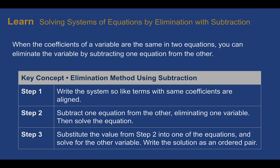Solving systems of equations by elimination with subtraction. Sometimes your coefficients will be opposites — that's when we use addition. When the coefficients are the same, either both positive or both negative, we use subtraction to eliminate one of the variables. The steps are the same as addition, except you line up terms with the same coefficients, then subtract one equation from the other — making sure you subtract everything, not just the first terms. Then plug your value back in and write the answer as a coordinate.